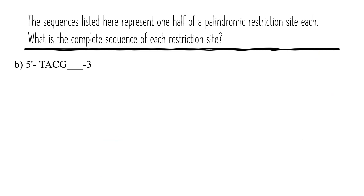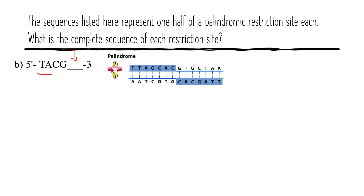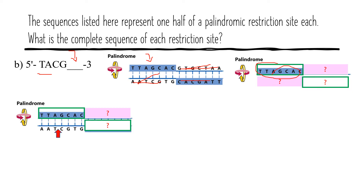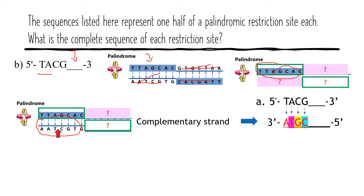In this question we have the five prime section but we are missing the sequence close to the three prime. Again, we have four sections — we have this one but we don't have these other regions. We can easily find them though. We start by finding the complementary: A is complementary to T, T is complementary to A, G is complementary to C, and C is complementary to G.